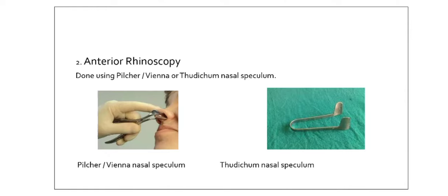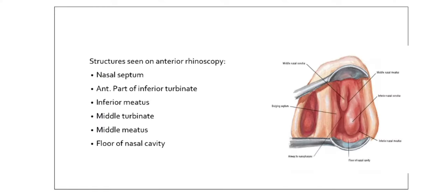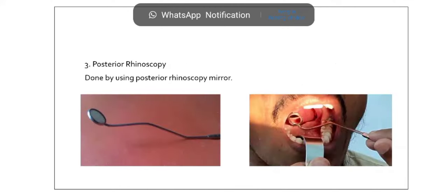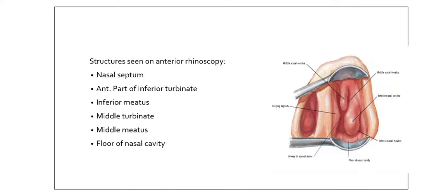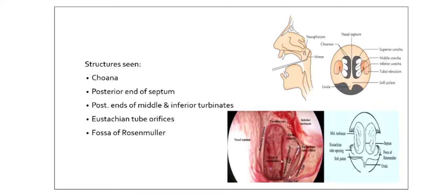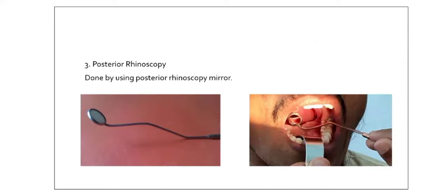Anterior rhinoscopy: using instruments like Thudichum's nasal speculum, you open the nasal vestibule and look at structures inside. The structures seen in anterior rhinoscopy are the nasal septum, anterior part of the inferior turbinate, inferior meatus, middle turbinate, middle meatus, and floor of the nasal cavity. Refer to the figure for a visual reference of all these structures.